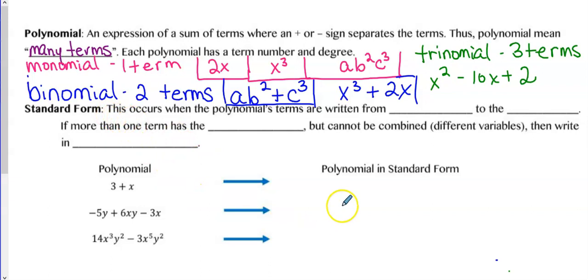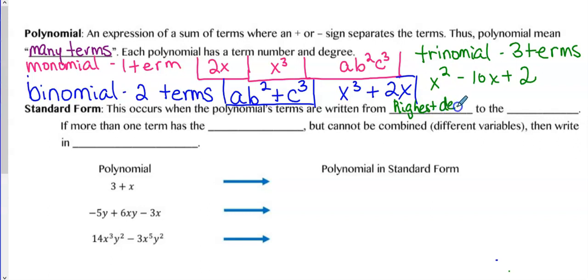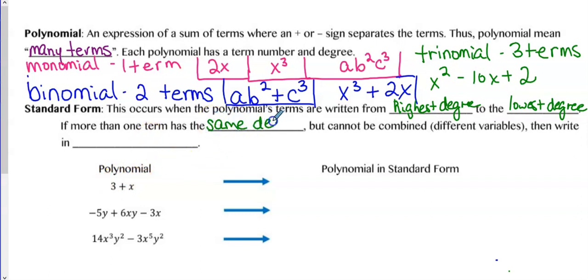Standard form occurs when a polynomial's terms are written from highest degree to lowest degree. Also, if more than one term has the same degree but can't be combined, then write it in alphabetical order.